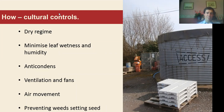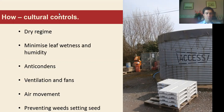Another technique that's probably less well used is a product called Anti-Condens. This can be sprayed onto the inner surface of both glasshouses and tunnels and it prevents condensation forming and disperses condensation so it's less prone to dripping under gravity onto the crop, which contributes to leaf wetness. There are different products for use on plastic films and glass so make sure you use the right product for the right job. Ventilation and fans are another useful technique — they can help to dry leaves and disperse humidity.